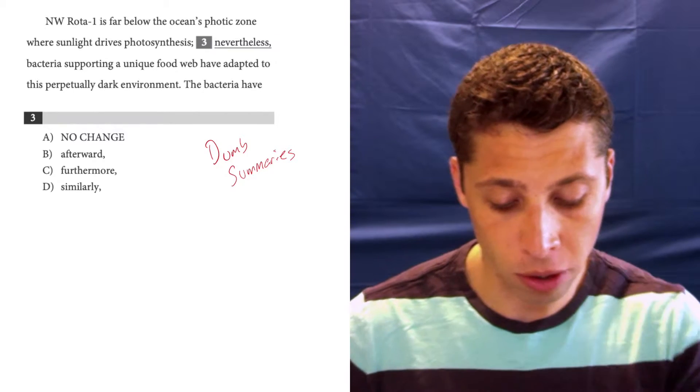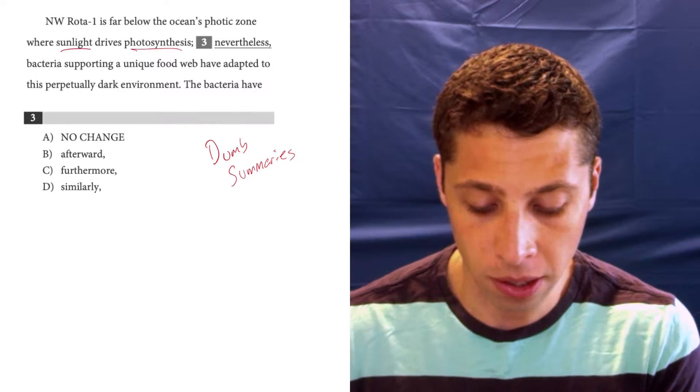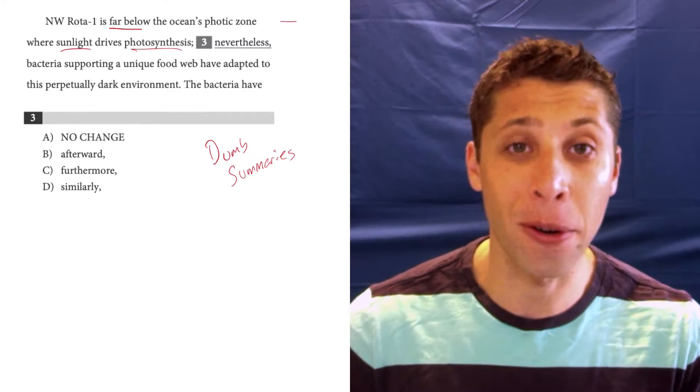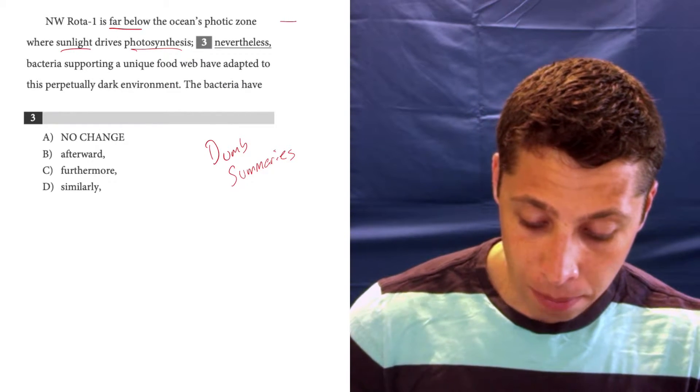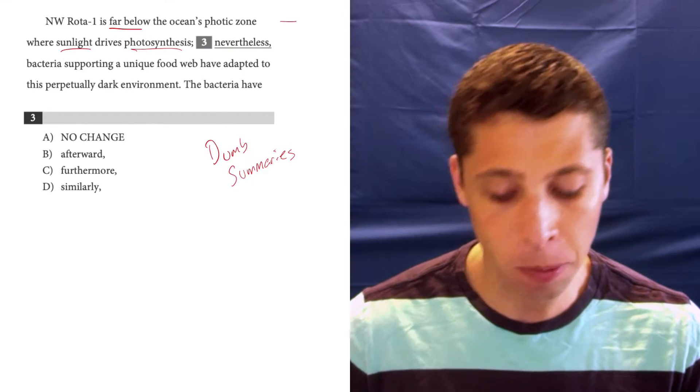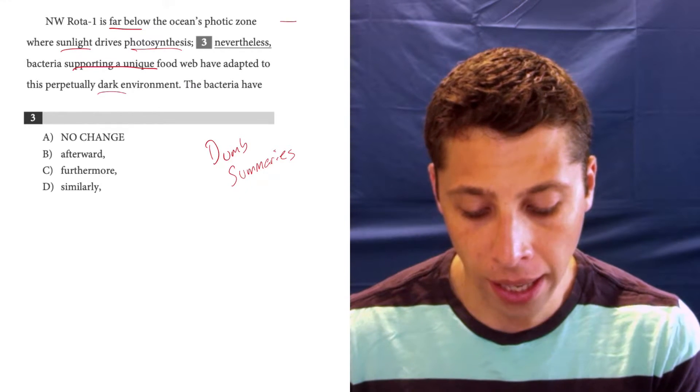NW Rota-1 is far below the ocean's photic zone where sunlight drives photosynthesis. So photosynthesis, sunlight, and it's far below. So it seems to be out of the realm of sunlight. Blank. Bacteria supporting a unique food web have adapted to this perpetually dark environment. So supporting a unique food web and it's still dark.